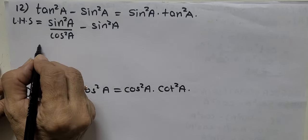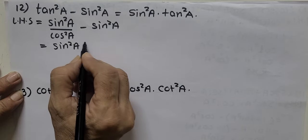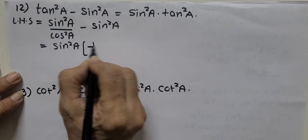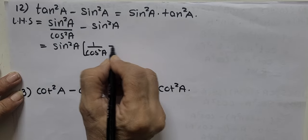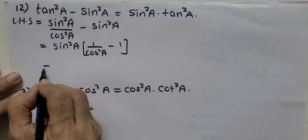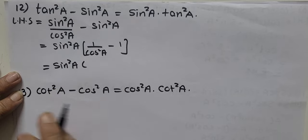Now what I will do is, I will remove sin square A common. So you get 1 upon cos square A minus 1. That is sin square A into bracket.